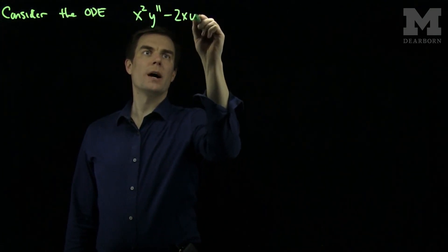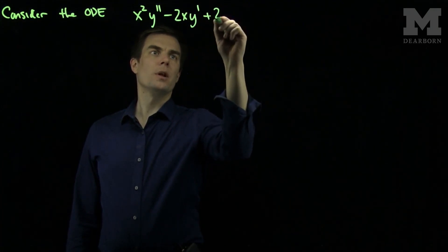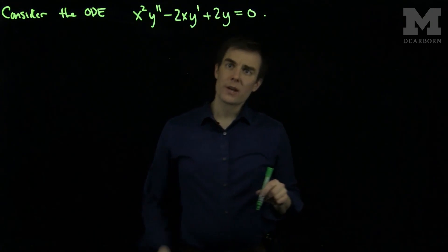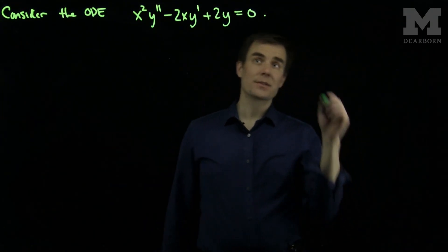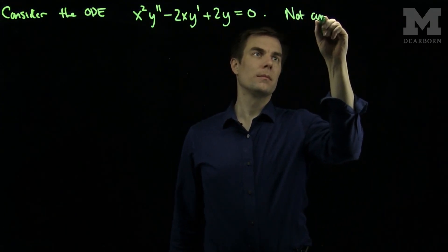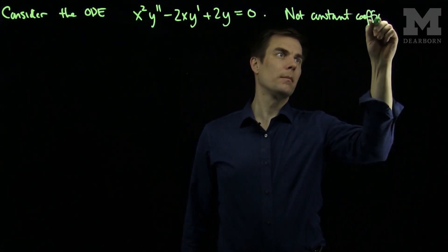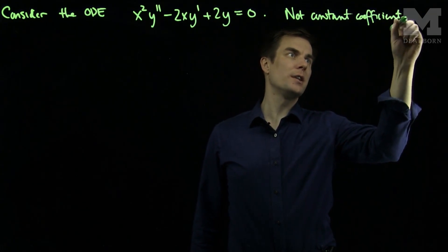So x squared y double prime minus 2xy prime plus 2y equals zero. We can look at this equation and notice that it's not constant coefficient. So our ordinary techniques will not apply.